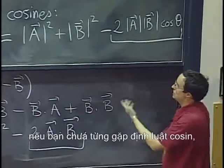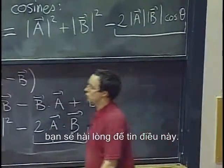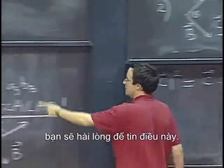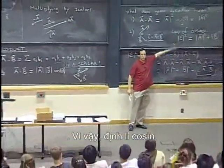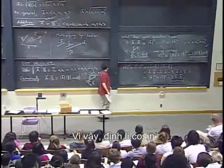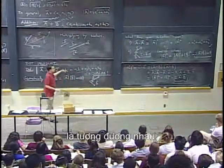Or vice versa, if you have never seen the law of cosines but you are willing to believe this, then this is the proof of the law of cosines. So the law of cosines and this interpretation are equivalent to each other.